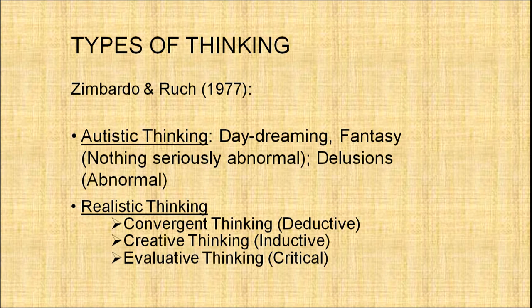The other type Zimbardo and Rook talked about is realistic thinking, which they further divided into three subcategories: convergent thinking (deductive reasoning), creative thinking (inductive), and evaluative thinking (critical). Convergent thinking is when we conclude something using a major premise and a minor premise. For example, the major premise is 'all human beings are mortal'; the minor premise is 'X is a human being'; therefore we conclude 'X is also mortal.' Nothing new is created — we use an already existing premise to reach a conclusion.